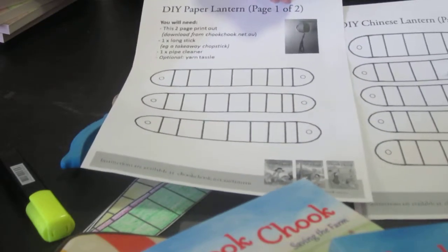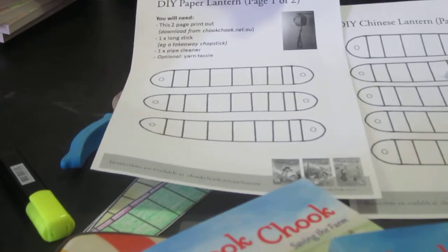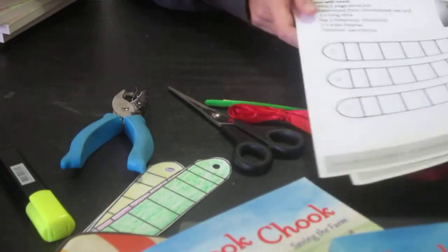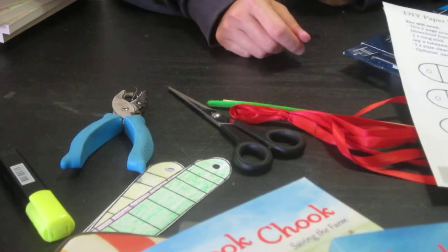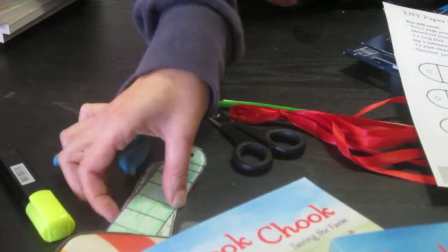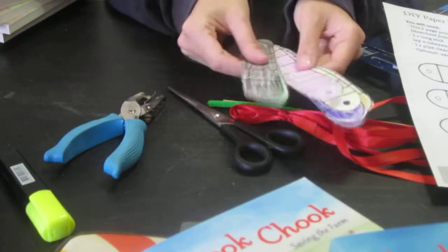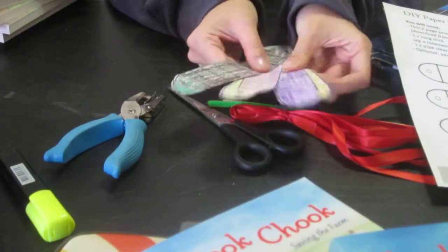You'll notice that a lot of times with Chinese lanterns, their most popular color is red, because red means good fortune or good luck. But you can make your lantern any color you want. In fact, what I've done is colored all the strips differently, so I can make a rainbow lantern.